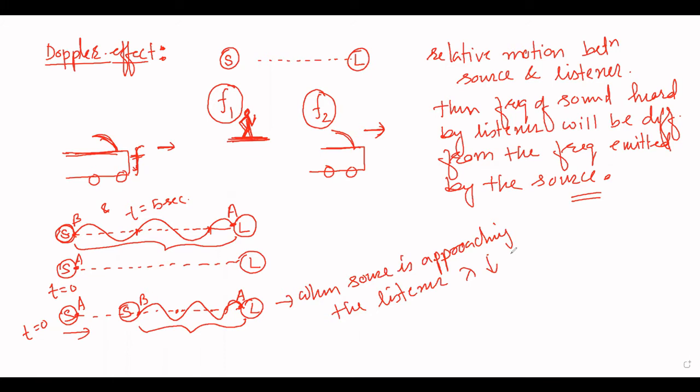When the source is approaching the listener, lambda decreases, so frequency increases.